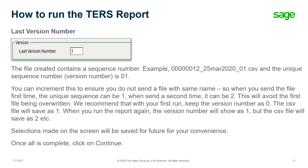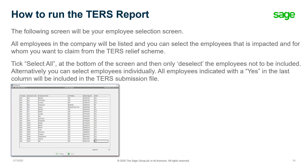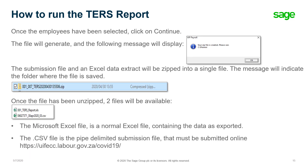Once all of the selections have been made, click on continue. The following screen will be your employee selection screen. All employees in the company will be listed and you can select the employees that are impacted and for whom you want to claim from the TERS relief scheme. Tick select all at the bottom of the screen and then deselect the employees not to be included. Alternatively, you can select employees individually. All employees indicated with a yes in the last column will be included in the TERS submission file.